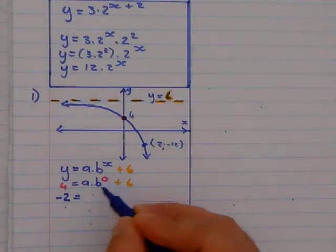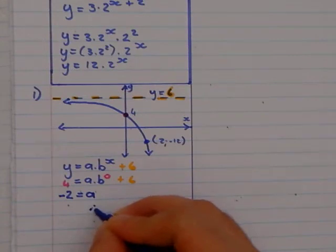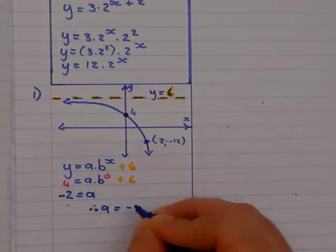Anything to the power of 0 is 1. So 1 times a is a. So therefore, we have a value. My a value is equals to negative 2.